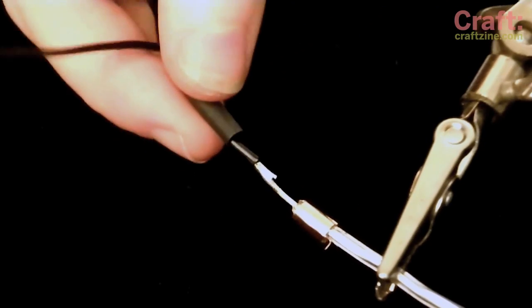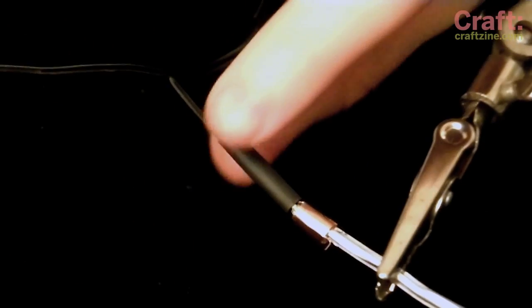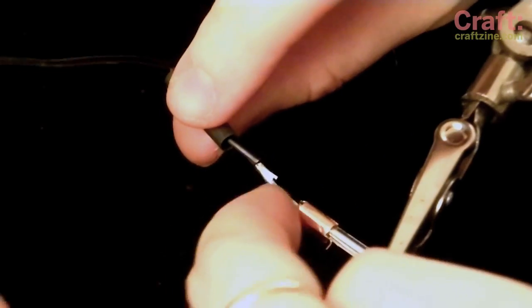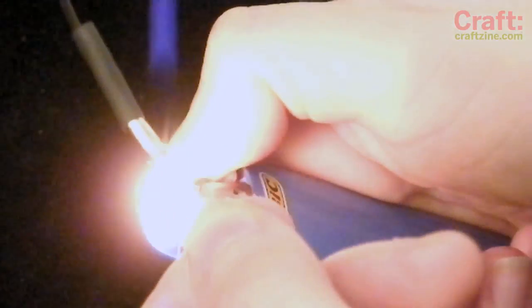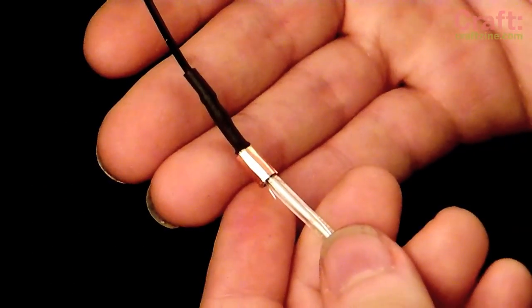Now we're going to heat shrink the inner wire. Pull that piece over so it protects the inner wire and the solder joint you just made, and just gently heat the heat shrink until you see it shrink down.